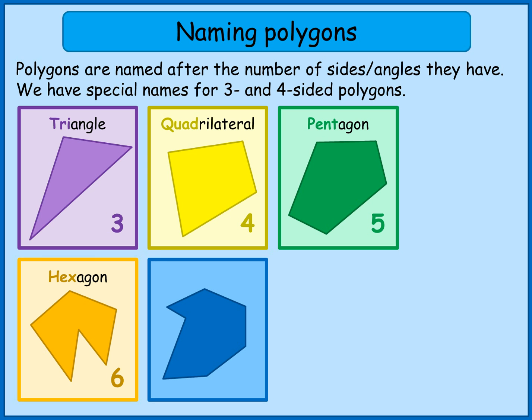This one has got seven sides and it's called a heptagon. Some people for some reason want to call it a septagon — it's not a septagon, it's a heptagon.